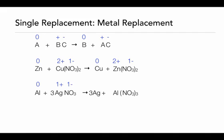This balances all the atoms in the reaction. Looking at the oxidation states: the silver becomes a zero oxidation state, aluminum has turned into a 3 plus cation, and the nitrate has stayed the same at 1 negative. And we can see again that we have a redox reaction.